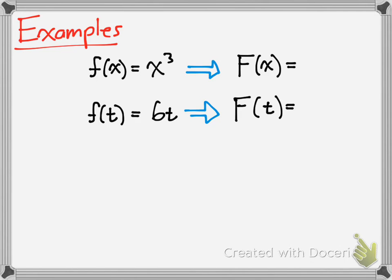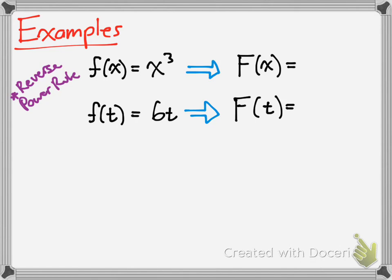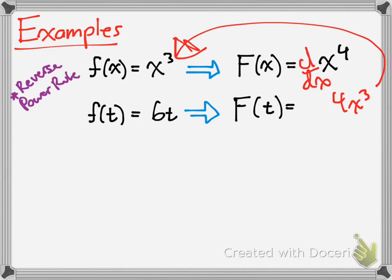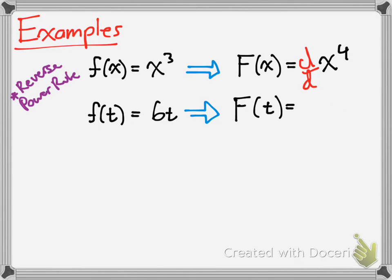Let's look at this first one: f of x is x cubed. What would be the antiderivative? You do the reverse power rule. You know that if this is the derivative and you want to find the antiderivative, the exponent has to be 1 greater. So you know it's going to be x to the 4th. But if you check your work and take the derivative of that, you'd get 4x cubed — not x cubed. So to get rid of the 4, you'd multiply by 1/4, and the 4s cancel. So you simply bring out the 1/4.